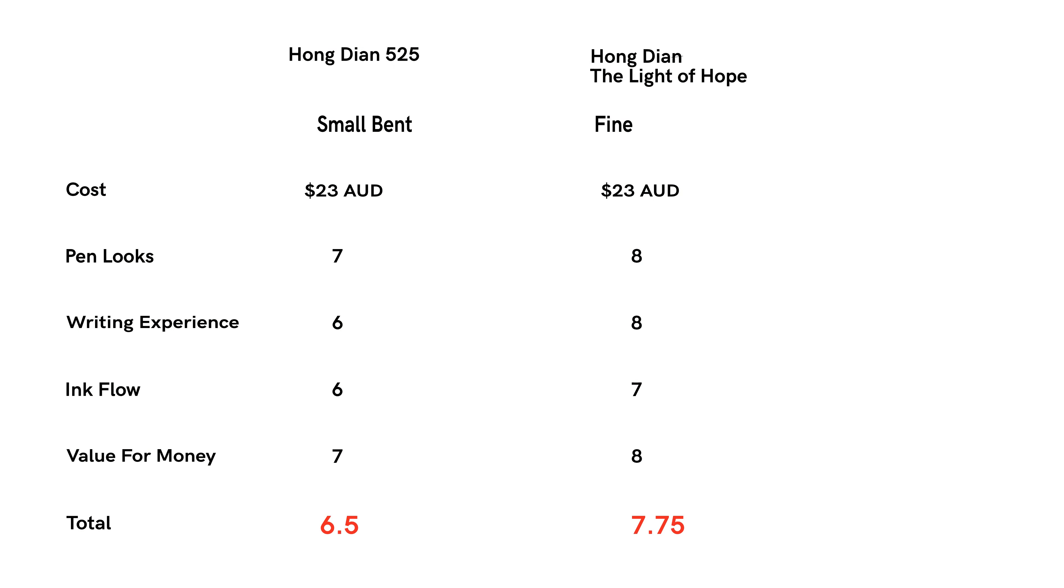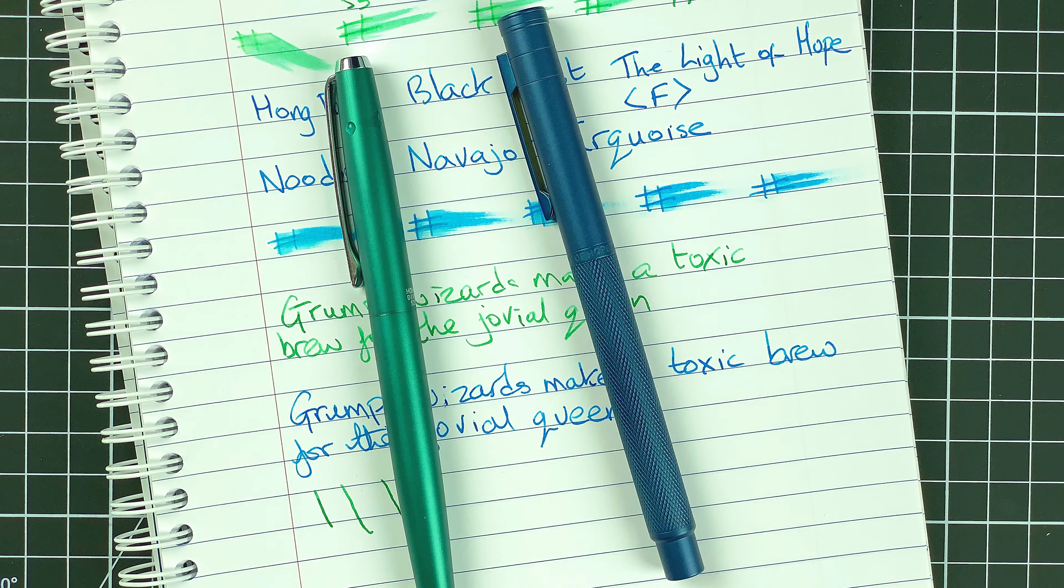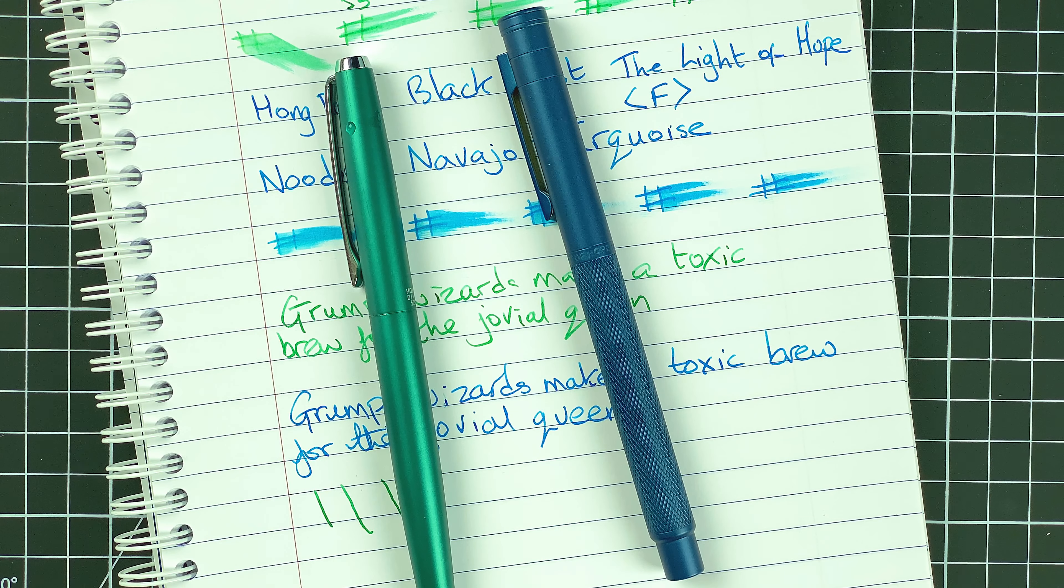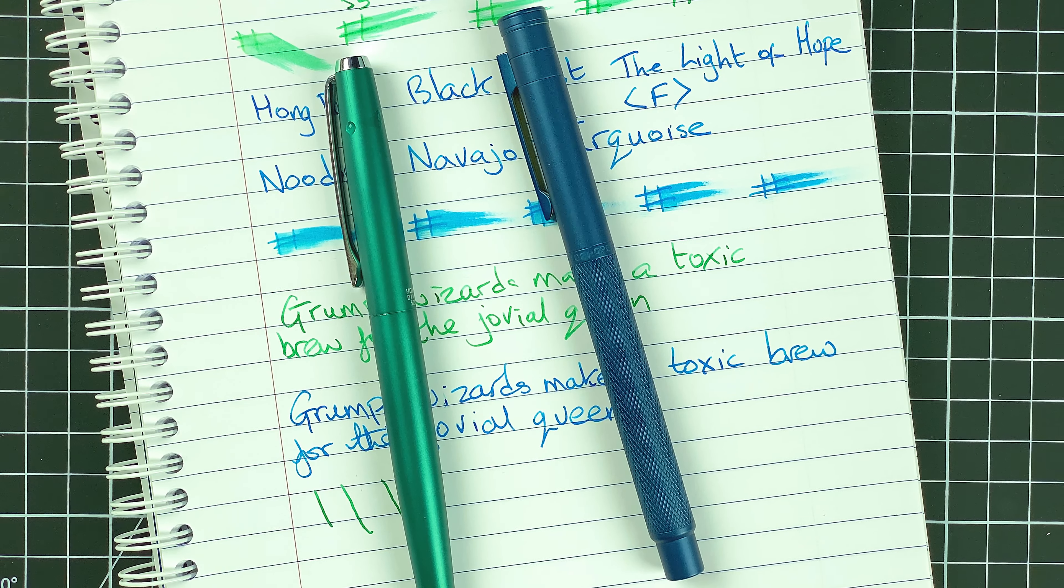Well, that means we get a total score for each of these pens of 6.5 out of 10 for the 525 and 7.75 for the Light of Hope. So in terms of today's showdown, that blue pen, that Light of Hope, that comes out as the clear winner.